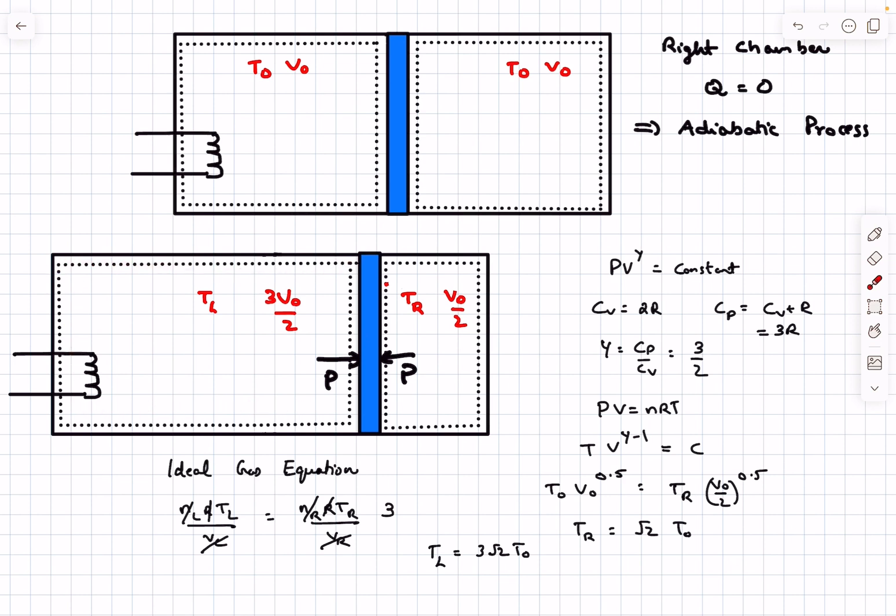Some work is being done on our system. In fact it's the system that is doing work because it is expanding. How do I determine it? One way is to do a PdV integral, but this takes a lot of time. We can do something else: the expansion work that the gas on the left side does on the piston is the same work that the piston does to compress the gas on the right chamber.